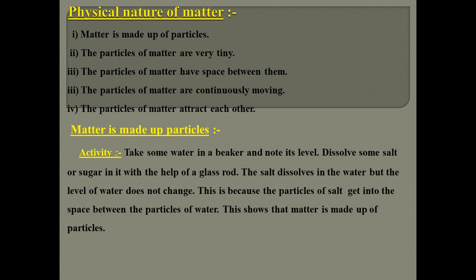Now we will look at the physical nature of matter in detail. Matter is made up of particles. The particles that make up matter are very small and tiny. The particles of matter have space between them, they are continuously moving, and they attract each other. We will see each of these one by one.